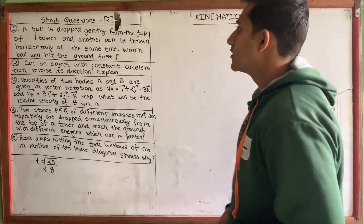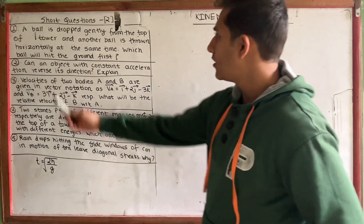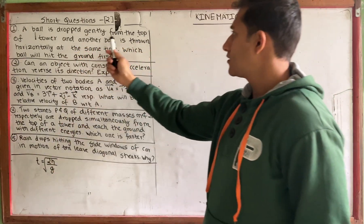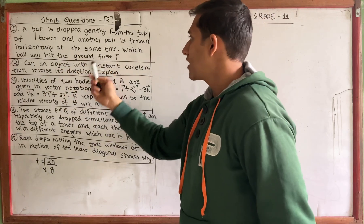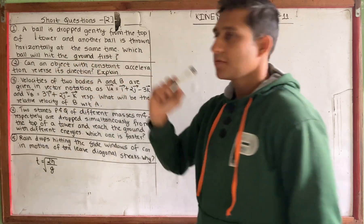Question number one: A ball is dropped gently from the top of a tower, and another ball is thrown horizontally at the same time. Which ball will hit the ground faster?